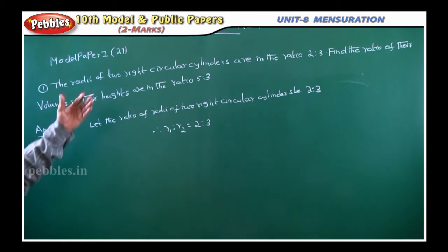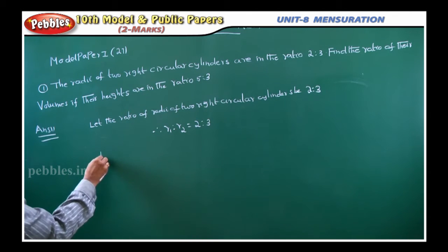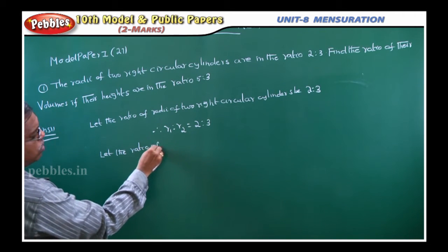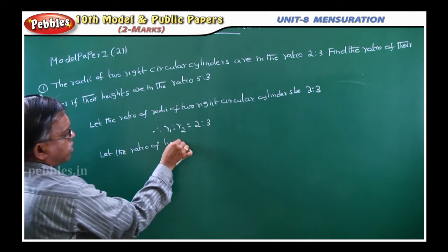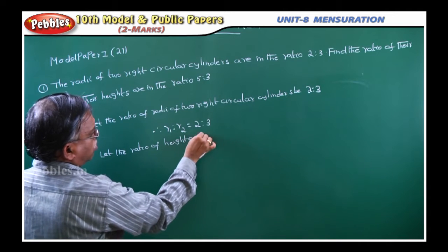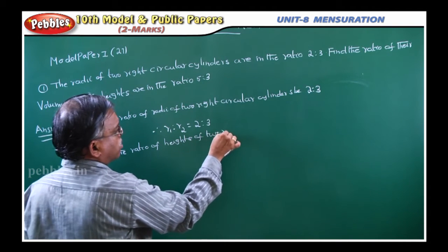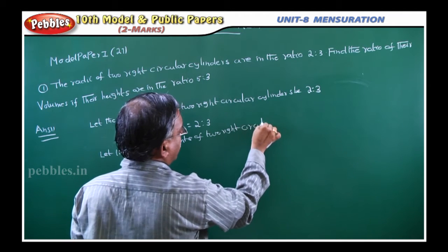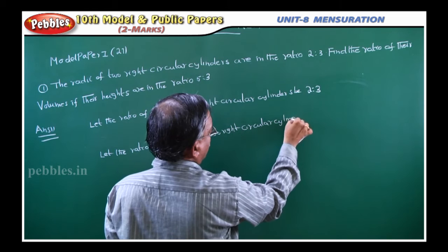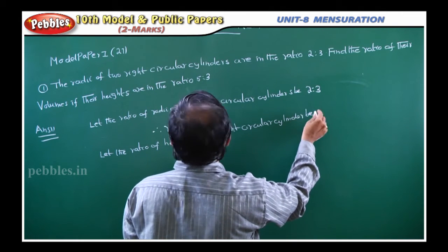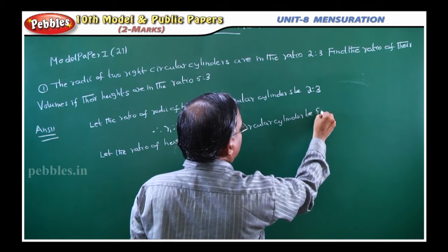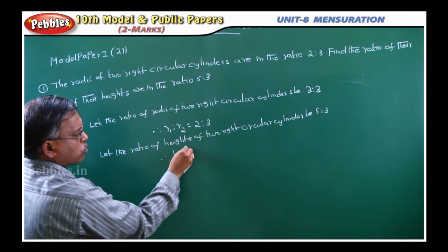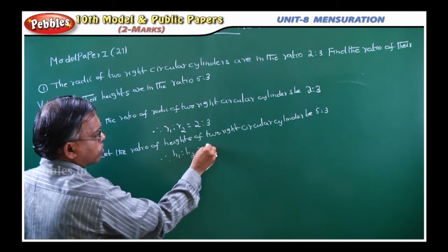Similarly, we have to write the heights ratio. Let the ratio of heights of two right circular cylinders be 5 is to 3. Therefore, h1 is to h2 is equal to 5 is to 3.